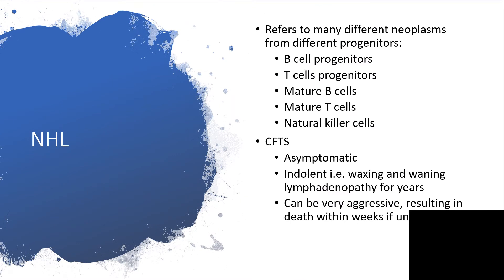Non-Hodgkin lymphoma refers to many different neoplasms from different progenitors. It could be B-cell progenitors, T-cell progenitors, mature B cells, mature T cells, or natural killer cells. The clinical features could be asymptomatic or indolent — indolent means the features are waxing and waning with lymphadenopathy for years.